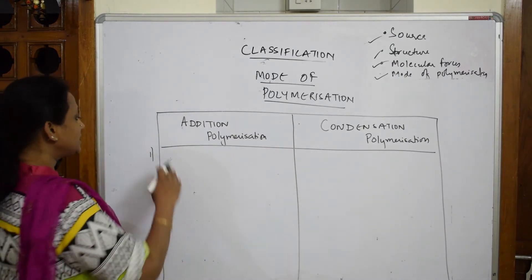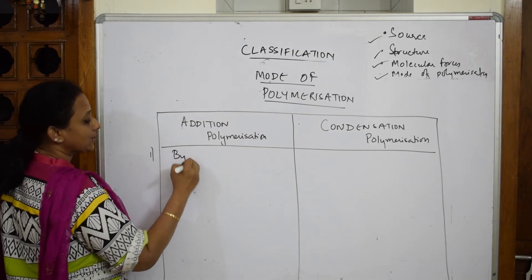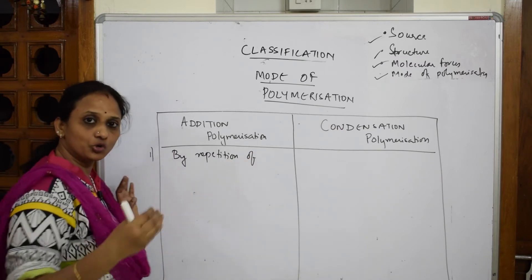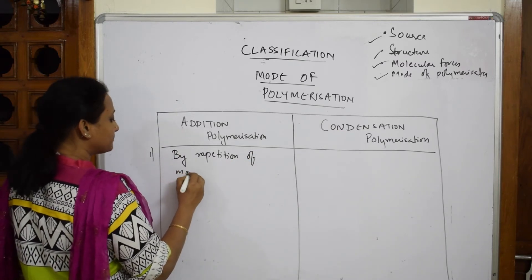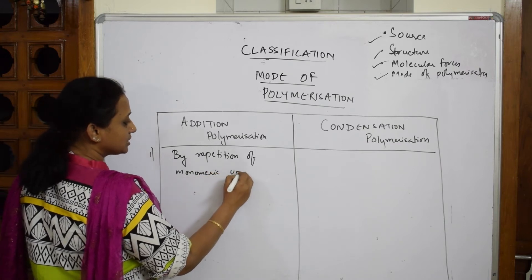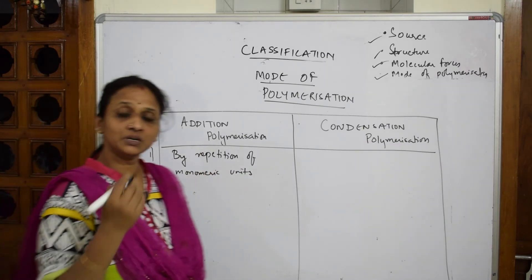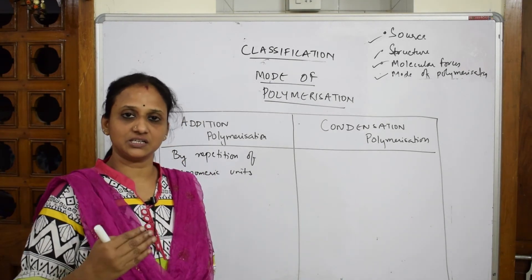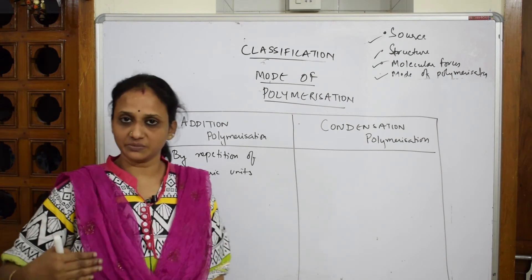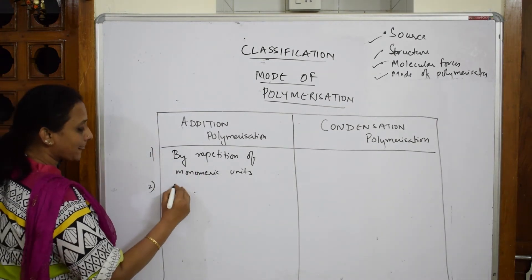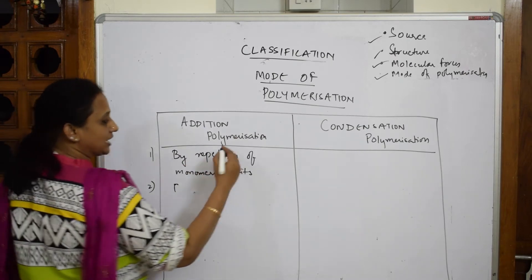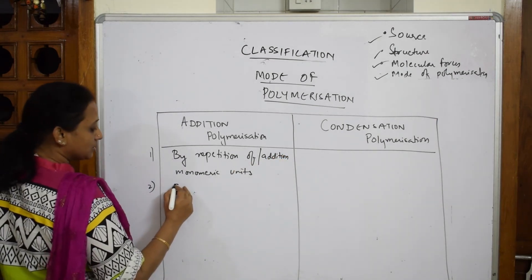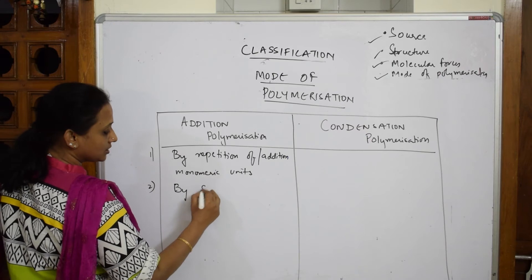Addition polymerization is formed by the repetition or addition of monomeric units. The monomers follow a step-growth polymerization mechanism involving chain initiation, chain propagation, and chain termination.